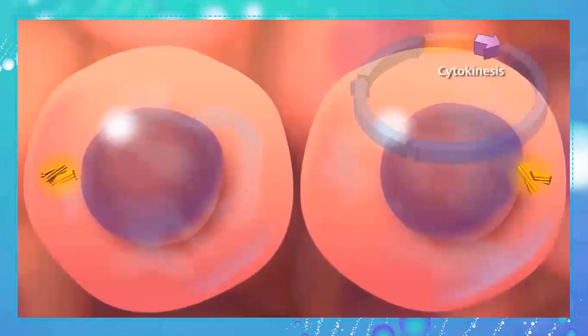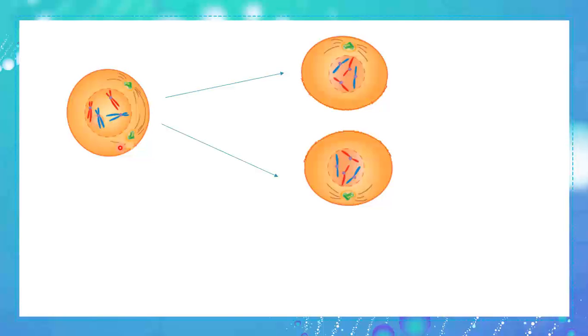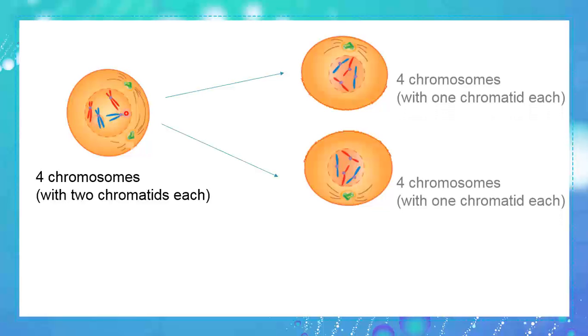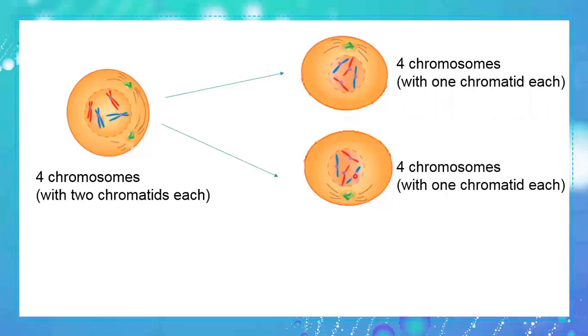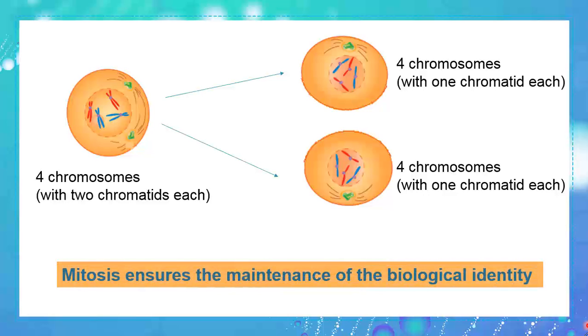When all the phases of mitosis are over, cytokinesis occurs to separate each cell from one another. Importantly, if we compare the number of chromosomes in the mother cell and in the daughter cells, we find that they are equal — four chromosomes in the mother cell and four in each daughter cell. For humans, those cells contain 46 chromosomes, or 2N. We can conclude that mitosis ensures the maintenance of the biological identity of an individual, where the chromosome number is conserved.